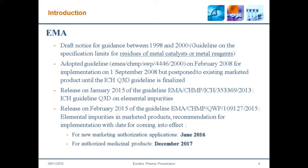For the EMA, there was a draft notice for guidance between 1998 and 2000, and the guideline on specification limits for residues of metal catalysts or metal reagents was adopted in February 2008 for implementation on September the 1st, 2008, but postponed for existing market products until the ICH Q3D guideline would be finalized. Released in January 2015 were the guidelines on ICH Q3D on elemental impurities, and released in February 2015 were the guidelines regarding elemental impurities in marketed products recommendation for implementation with dates for coming into effect.